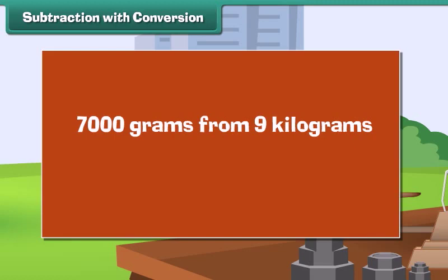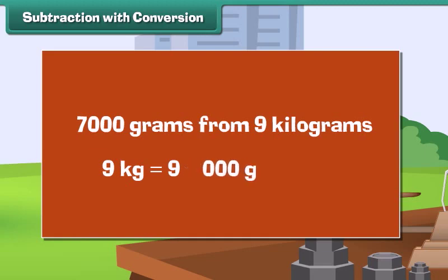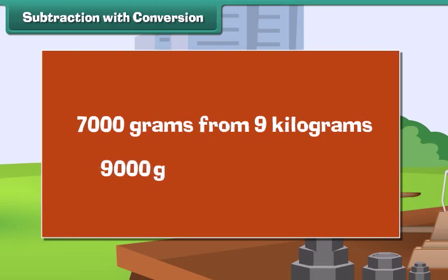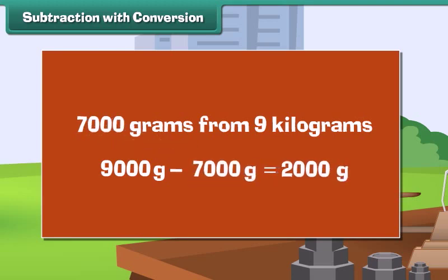Subtraction with conversion: 9 kg is equal to 9000 grams. 9 kg minus 7000 grams equals 9000 grams minus 7000 grams, which equals 2000 grams.